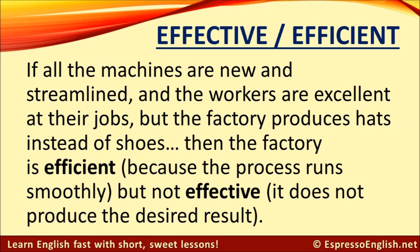Now let's consider the other situation. If all the machines in the factory are new and streamlined, and the workers are excellent at their jobs, but the factory produces hats instead of shoes, then the factory is efficient because the process runs very smoothly, but it is not effective. It does not produce the desired result — it's producing the wrong product, in fact.